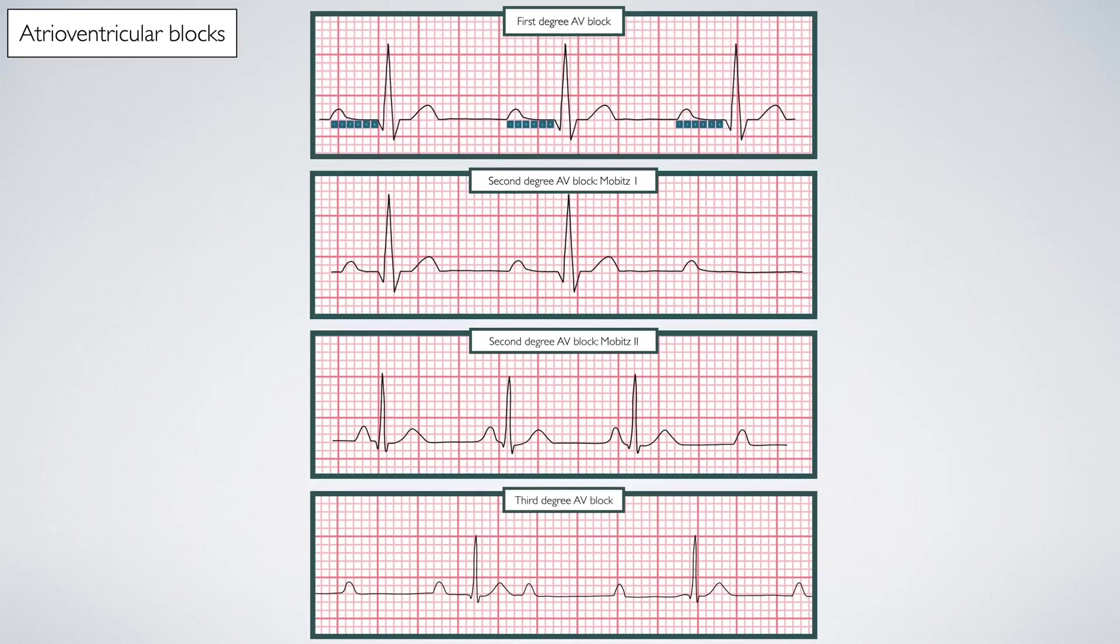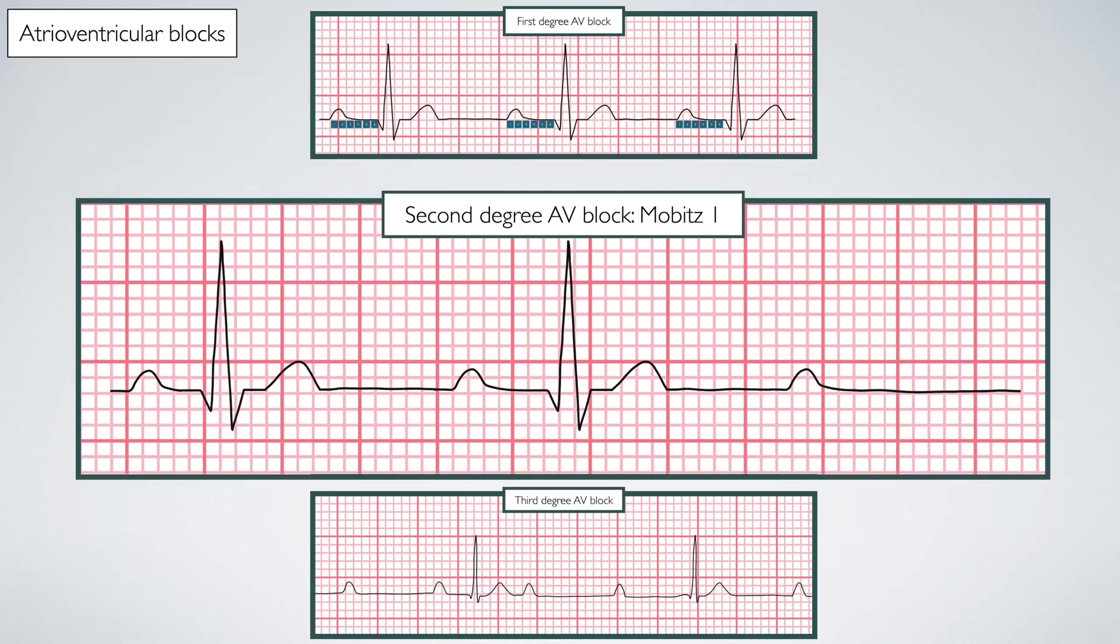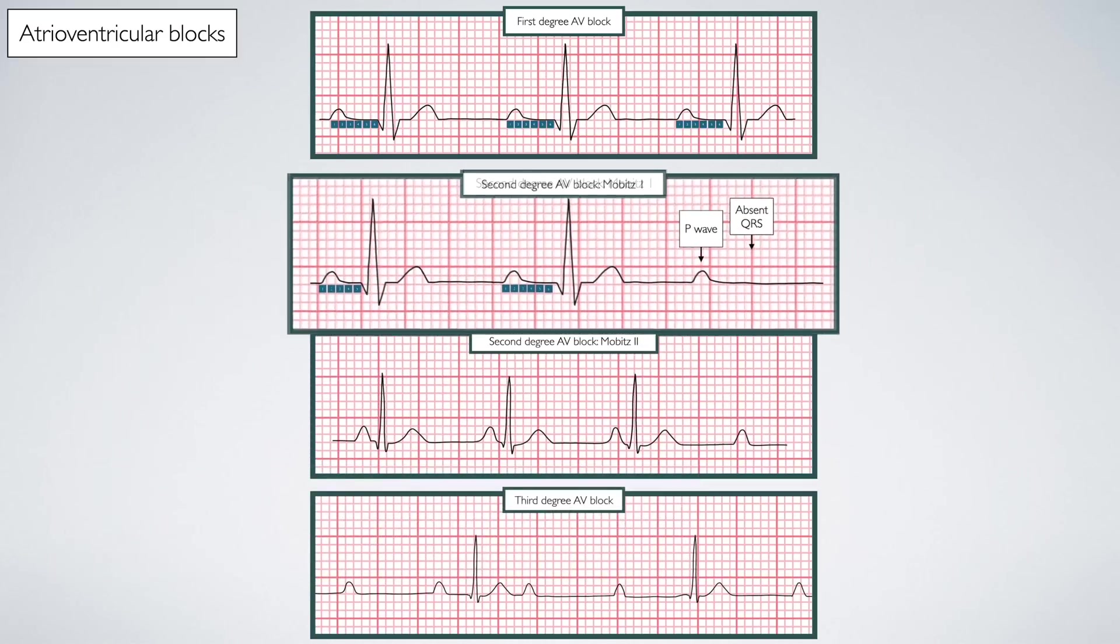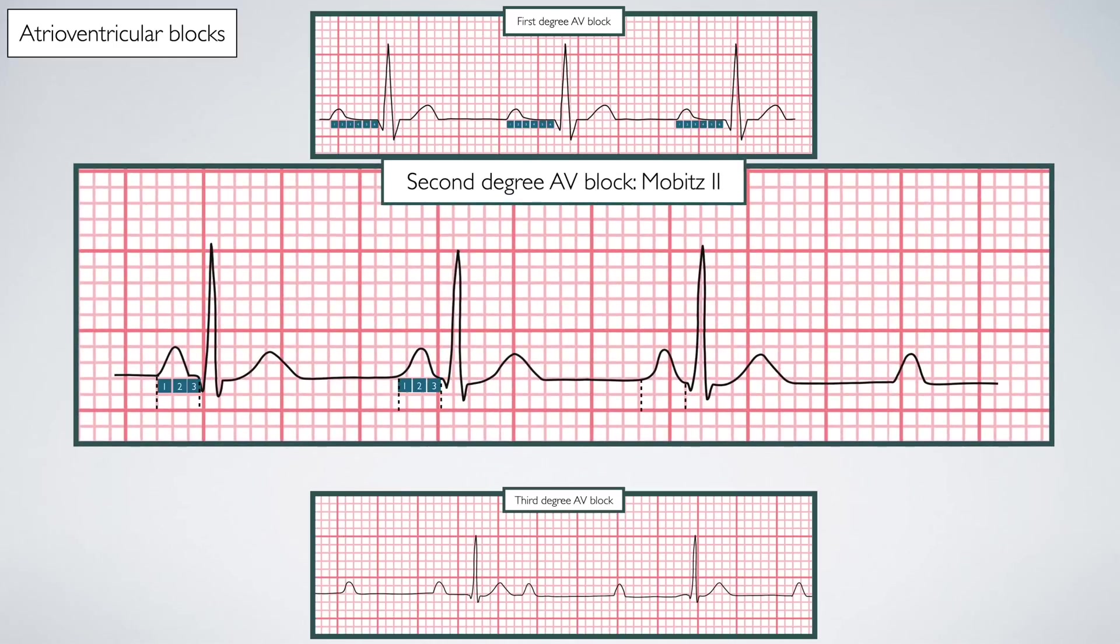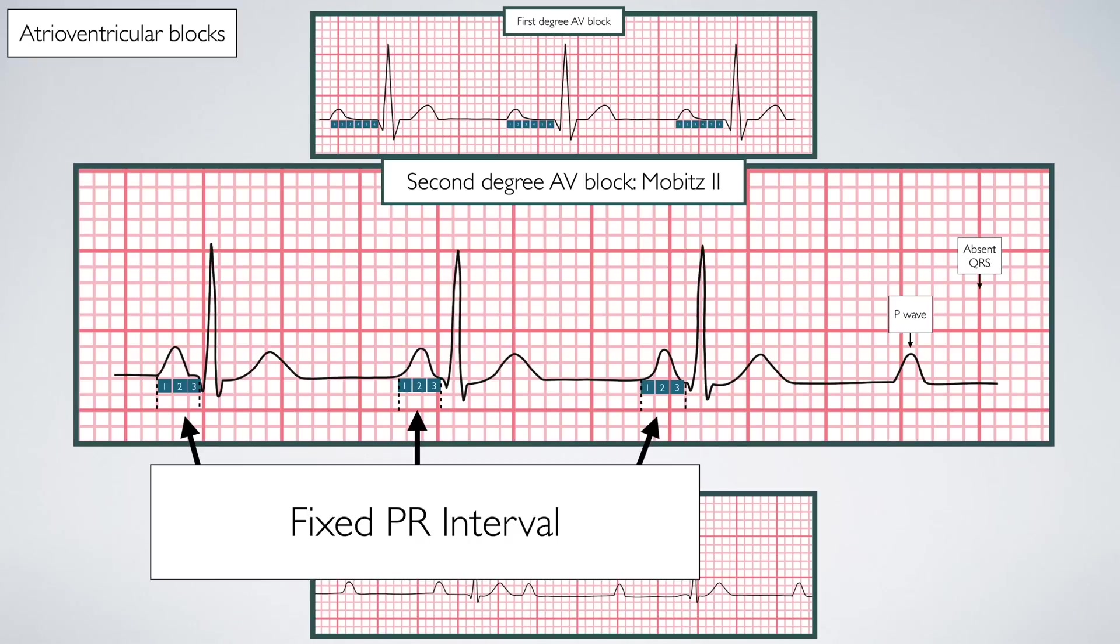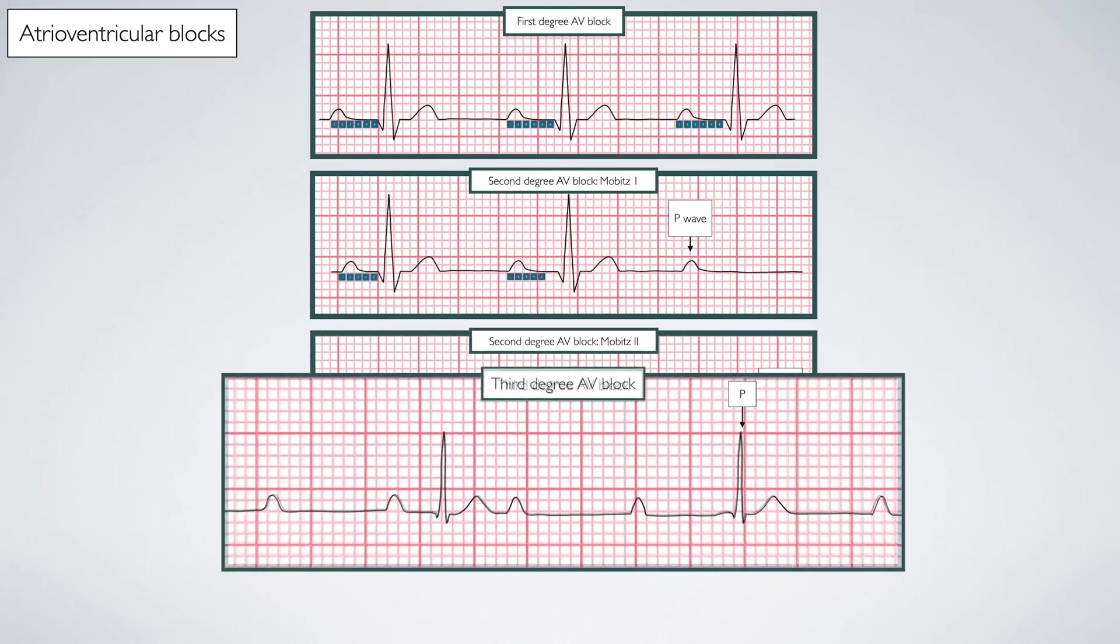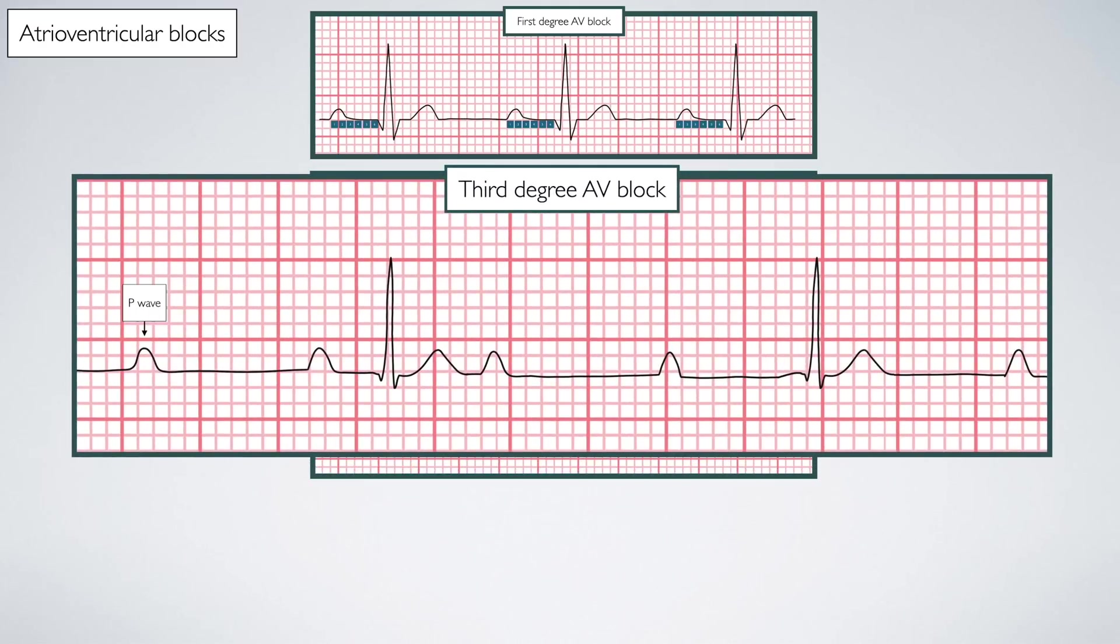Second degree heart block is divided into two forms. The first is Mobitz type 1. This presents with a progressively increasing P-R interval until an impulse is not conducted to the ventricles. This progressive prolongation is known as Wenckebach phenomenon. Mobitz 2 presents with a fixed P-R interval but will drop a QRS complex due to lack of conduction through the bundle of His. Third degree heart block shows complete dissociation between the atria and ventricles. P-waves occur at regular intervals, but QRS complexes are generated separately by an accessory pacemaker.